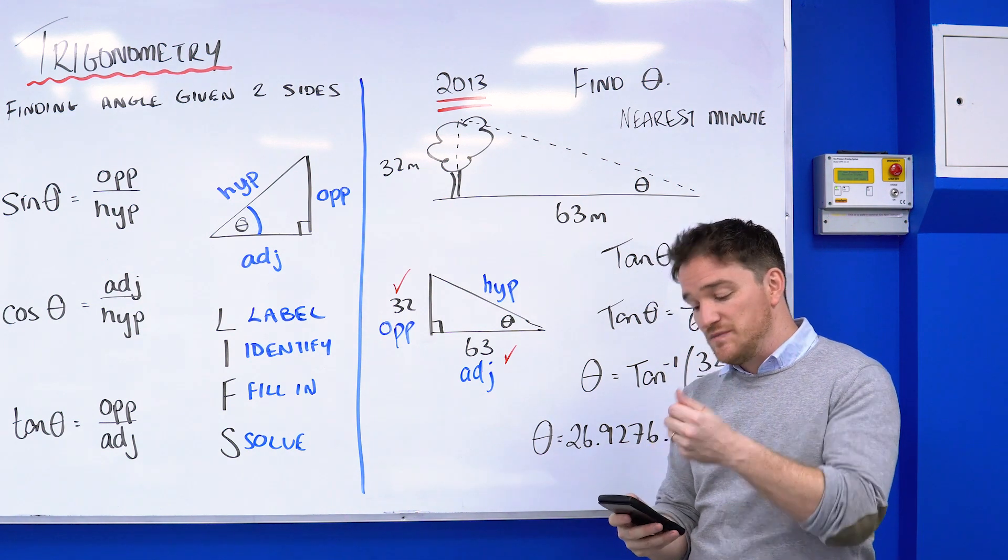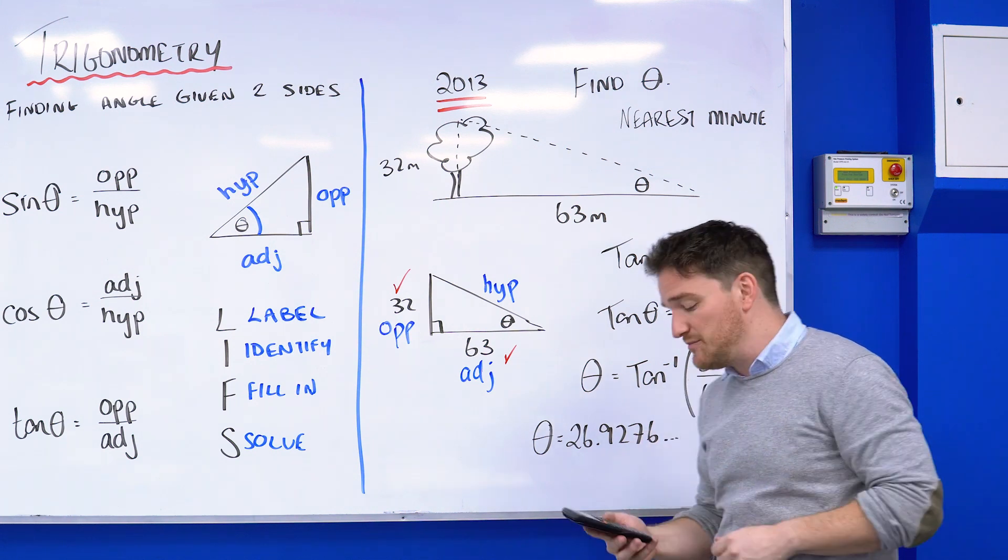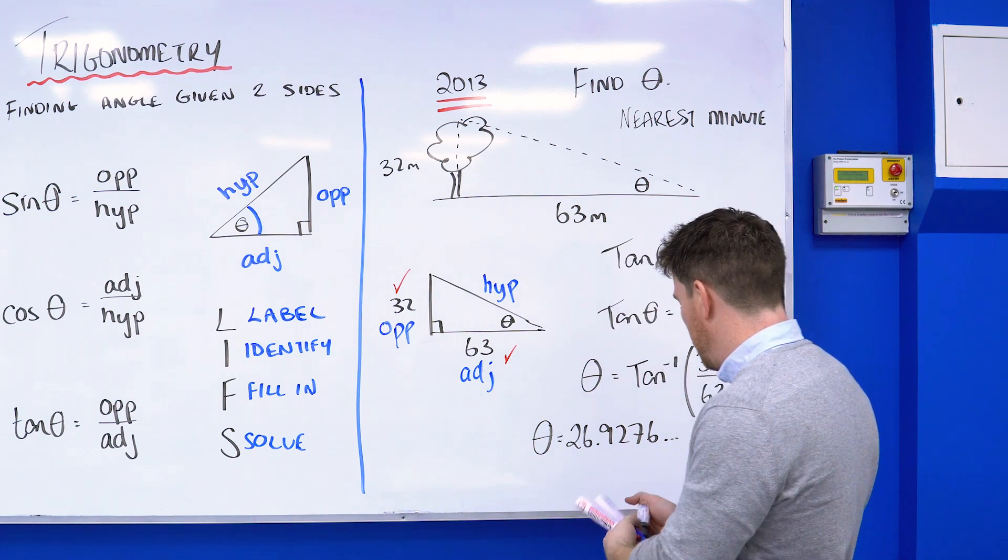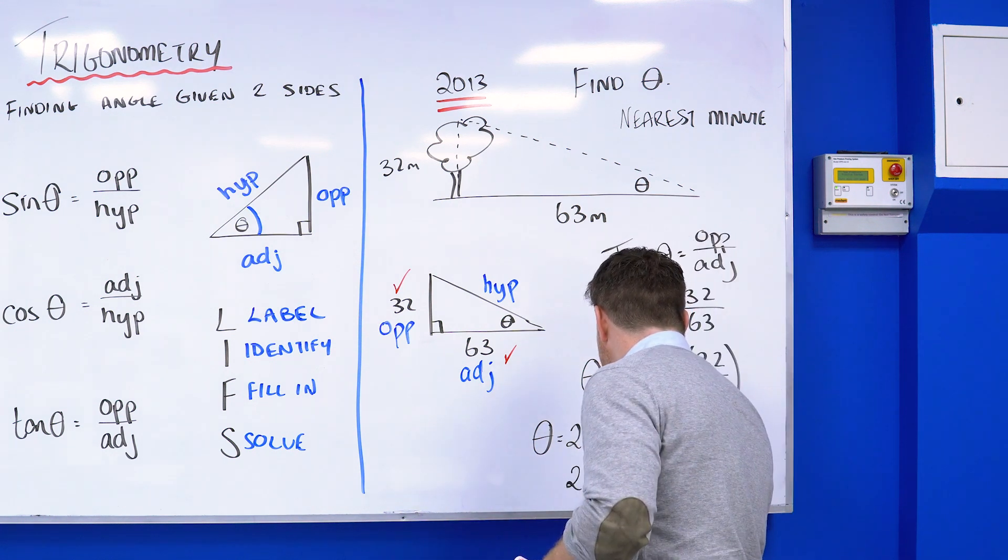It will tell me that this is 26 degrees and 55 minutes, so 26 degrees 55 minutes, and that is us done and dusted for finding the angle given two sides.